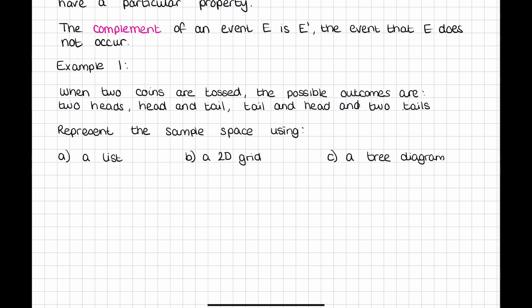So when we do this as a list, generally we would want to write it in set notation. So we do little curly brackets and we'd have head and head, head and tail, tail and head, and then tail and tail. That's how we do it as a list.